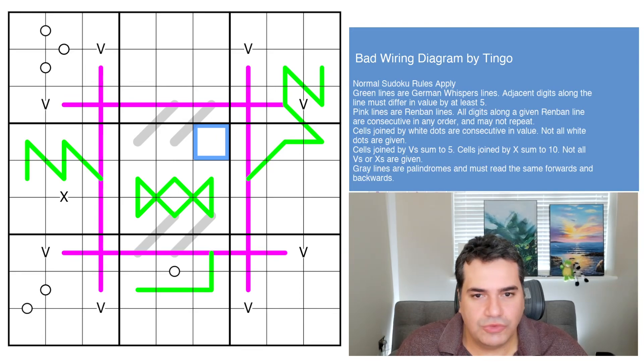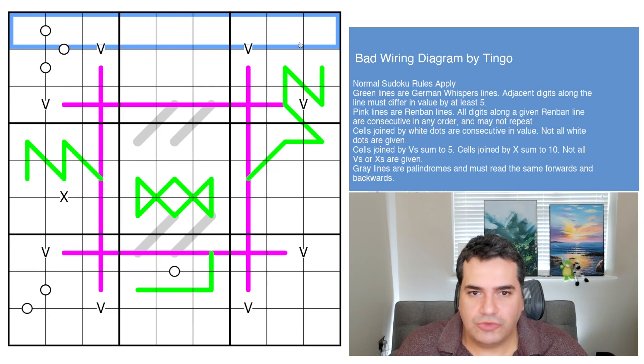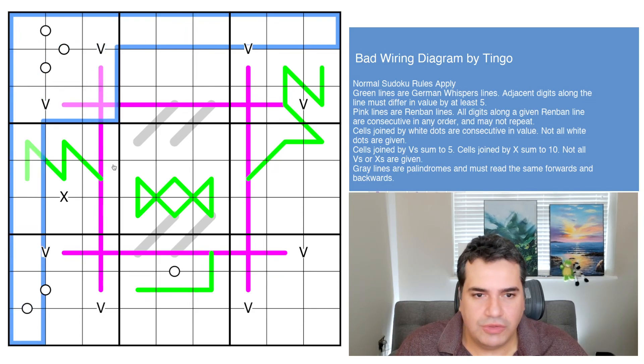Now, let's take a look at the rules for today's puzzle. Indeed, it looks very colorful. So normal Sudoku rules apply. That means we need to place the digits one through nine in every row, column, and box in the grid.